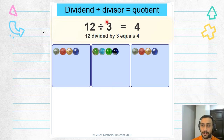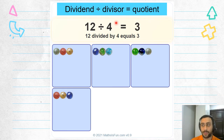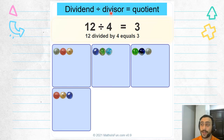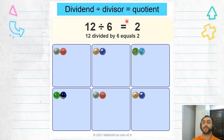12 — dividend. Three — divisor. And four — quotient. Or this one: 12 — dividend, four — divisor, and three is the quotient. Here's another example: 12 divided by six.